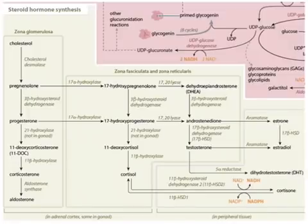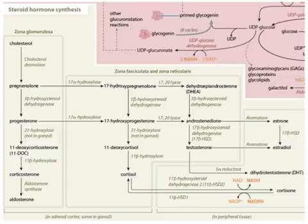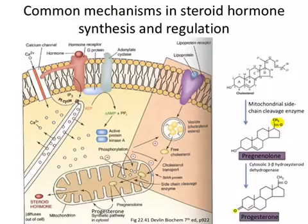A summary of steroid hormone metabolism is provided on your metabolic map. It is up in the upper left-hand corner, and that portion is shown here. This image shows a summary of steroid hormone regulation and the first steps of the synthesis.